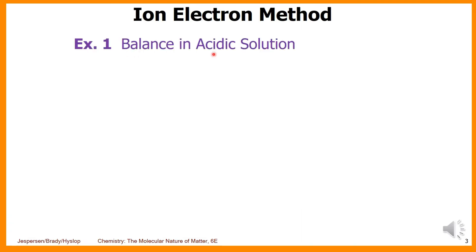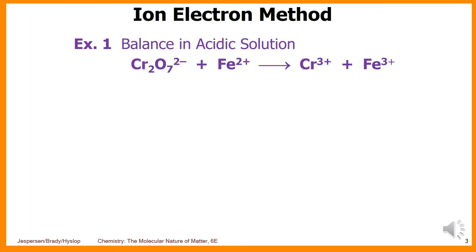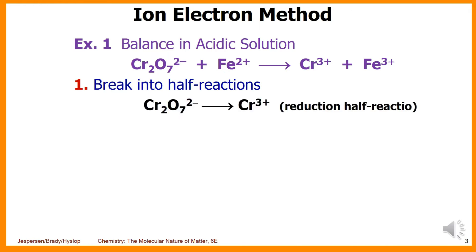Example one: balance the following equation in acidic solution. The equation is Cr₂O₇²⁻ plus Fe²⁺ goes to Cr³⁺ and Fe³⁺. Applying step one, we break it into half-reactions: dichromate goes to Cr³⁺, which is the reduction half-reaction.